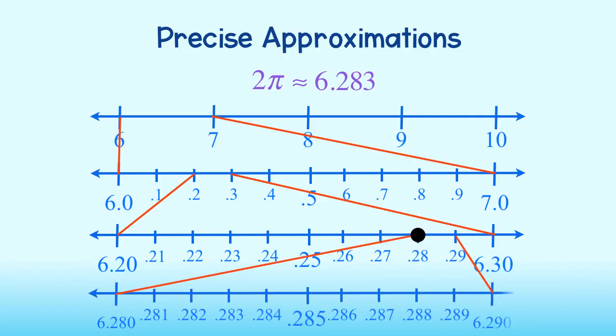Dividing this number line into 10 sections, we see 6.283 to be right here. We can continue this process literally forever until we've come up with a location that we are satisfied with.